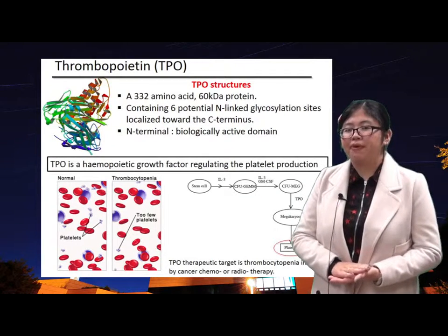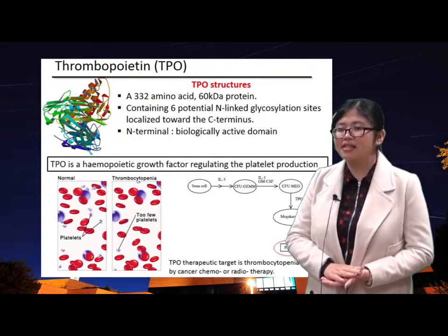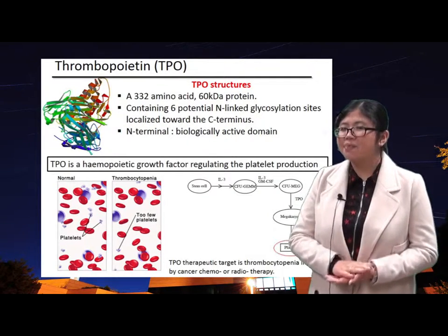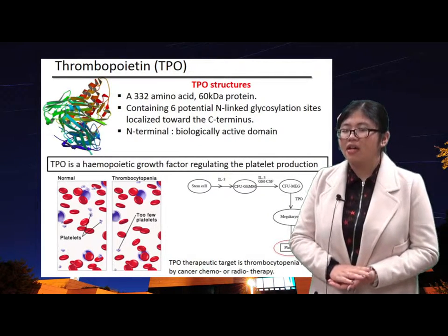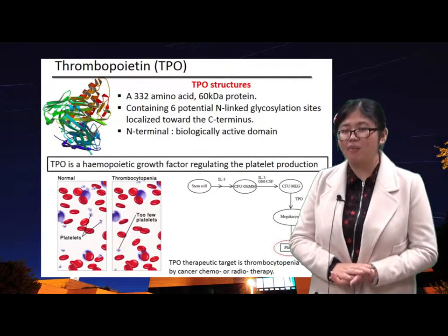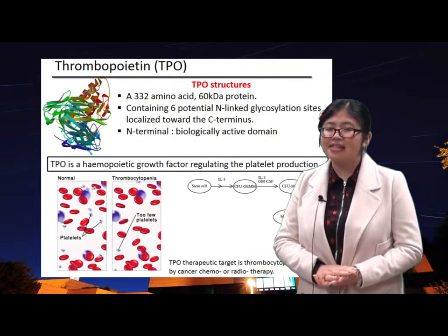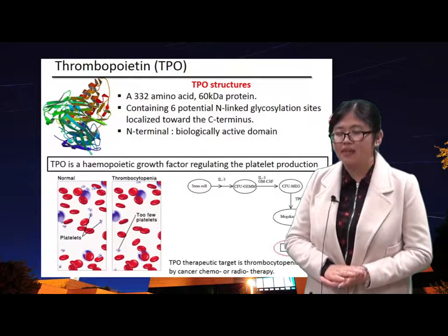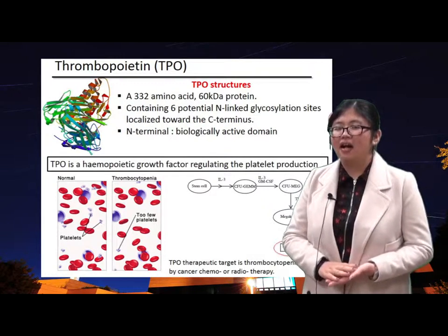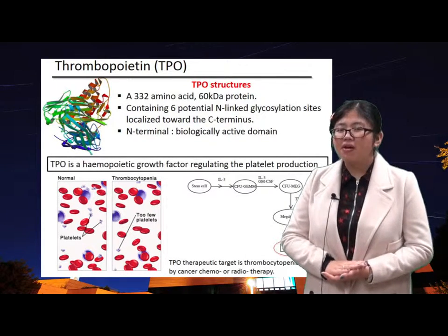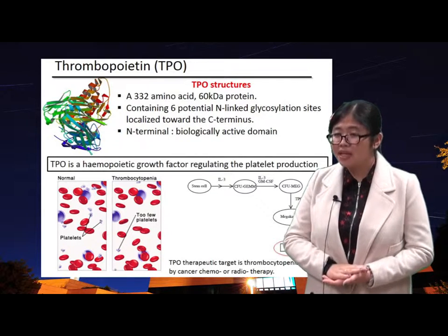Another important hematopoietic growth factor is thrombopoietin. Human thrombopoietin is a 332 amino acid, 60 kilodalton glycoprotein. It contains 6 potential N-linked glycosylation sites, all localized towards the C-terminus of the molecule. The N-terminal domain exhibits a high degree of amino acid homology with erythropoietin and represents the biologically active domain of the molecule. Thrombopoietin is a hematopoietic growth factor that regulates platelet production and represents an important future therapeutic agent in combating thrombocytopenia, a condition characterized by reduced blood platelet levels. The most likely initial therapeutic target is thrombocytopenia induced by cancer chemotherapy or radiotherapy.